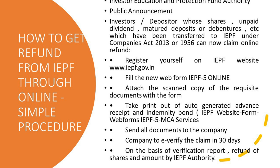Register yourself on the IEPF website www.iepf.gov.in. Fill the new web form IEPF-5 online and attach scanned copies of the requisite documents with the form. Take a printout of the auto-generated acknowledgment receipt and indemnity bond — the indemnity bond is available on the IEPF website under web forms IEPF-5 on the MCA service. Send all documents to the concerned company for verification.